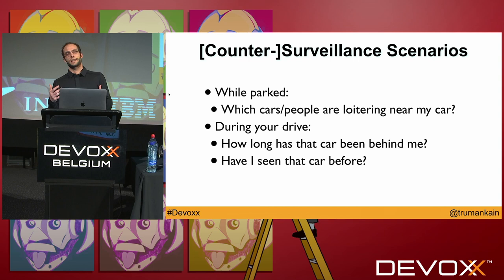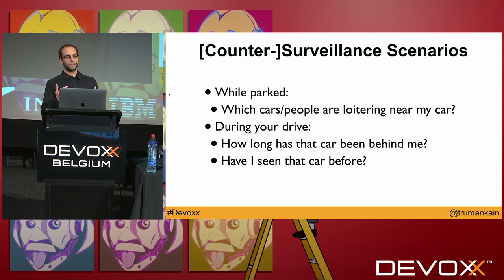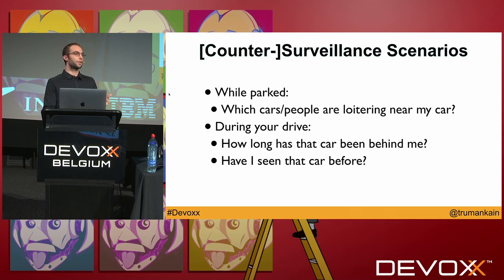This took some inspiration from Nest cams and Ring cams — it's essentially a rolling Nest cam, which is cool because you have all that rich vehicle data. Two main scenarios: first, while parked — which cars or people are loitering near my car; second, during your drive — how long has that car been behind me, have I seen that car before? The data is there. If you don't pull it from Tesla at that moment, you're never going to get it back. As soon as I found that out, I started pulling that data to look at historical drives and battery usage.